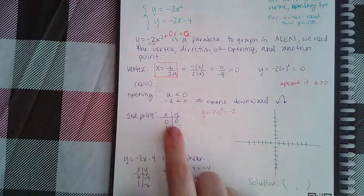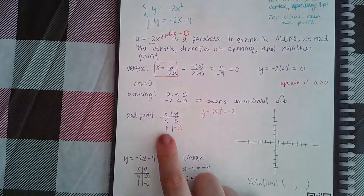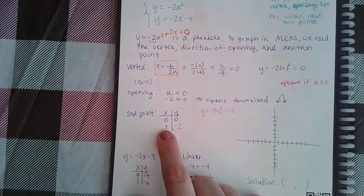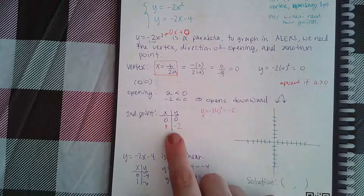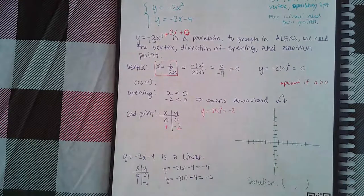And then I already know that (0,0) is going to be a vertex point. I need another point, so I chose to use the x value of 1, and I plugged into the equation and I got the y value of -2.